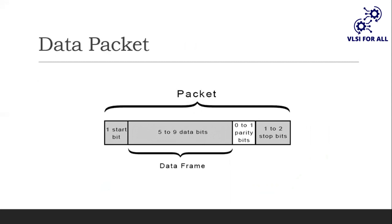The data packet also consists of a data frame which usually contains five to nine data bits — at maximum it can hold nine data bits. This is then followed by a parity bit. The parity bit is kept zero if the number of ones in the data bits are even, and it is kept as one if the number of ones in the data bits are odd. This is followed by one or two stop bits based on the UART protocol.